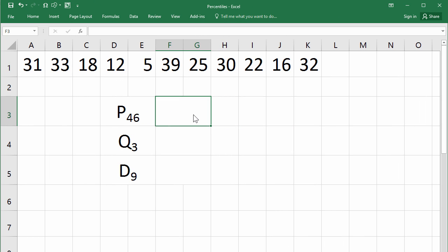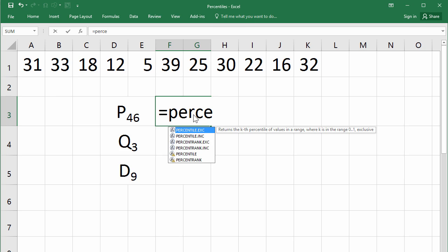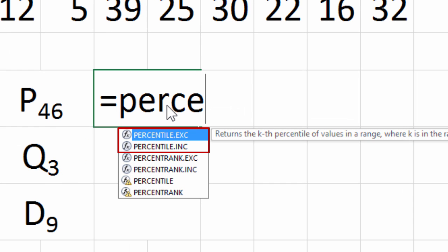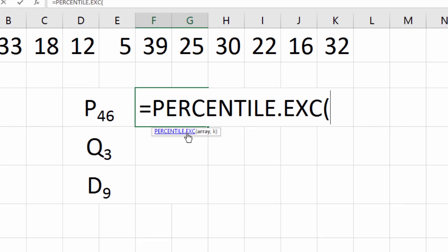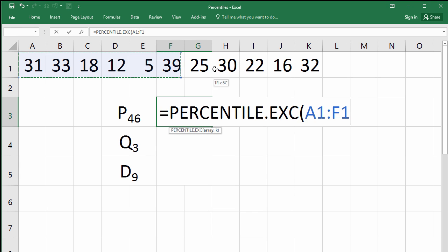For the 46th percentile, we'll type equal, and before you finish typing percentile, Excel gives you the options percentile exclusive and percentile inclusive. We will be using percentile exclusive because we want 46% of the data to be strictly less than the result. Select the data, put a comma, and for the 46th percentile, I'll input 0.46, and then enter.